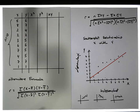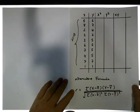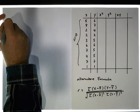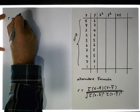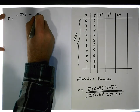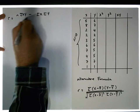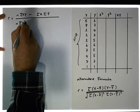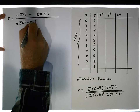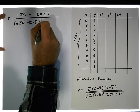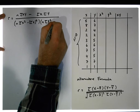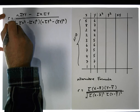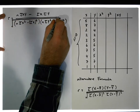So we're trying to calculate the strength of the relationship. The formula we're going to use is: r equals n times the sum of the xy column, minus the sum of the x column times the sum of the y column, all divided by the square root of n times the sum of x squared minus the sum of x squared, times n times the sum of y squared minus the sum of y squared.